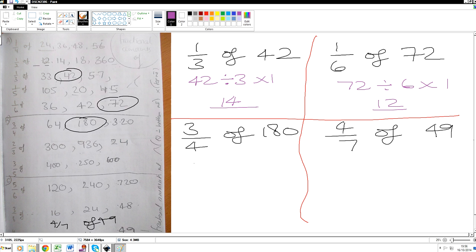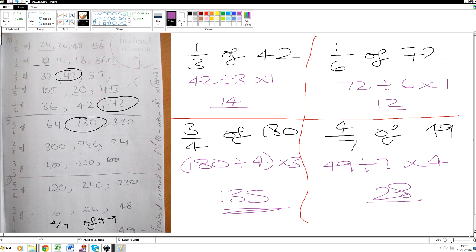3 fourths of 180 is 180. We divide it by the bottom number 4 and then we multiply it by the top number which is 3. So that gives us an answer of 135. Next, last one is going to be 49 divided by 7 times it by 4. That gives us an answer of 28. Well done folks. Excellent. So we understand how to do fractional amounts. That's the end of that video then.